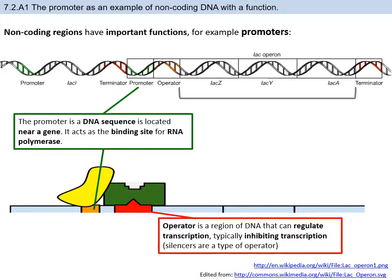Right next to the promoter is what we call the operator. The operator is the one in control — it regulates transcription activity. It can increase the chance of transcription by increasing the binding efficiency of RNA polymerase to the promoter. Or it could be inhibited — a protein might be bound to the operator, and when stuck to that operator, it physically prevents RNA polymerase from moving forward along the DNA sequence so transcription can't happen.